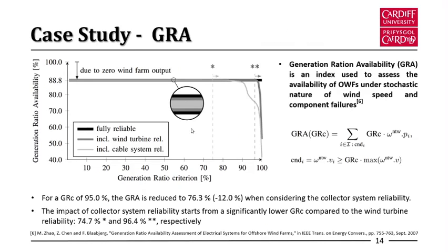The Generation Ratio Availability, or GRA, is normally used as an index to assess the availability of an offshore wind farm under different uncertainties. We selected three scenarios: one where the wind farm is fully reliable, one considering only wind turbine failure, and one considering both wind turbine and cable section failure. As you can see in the graph, for a criterion of 95%, the GRA is reduced significantly to below 76.36% when the cable is included.